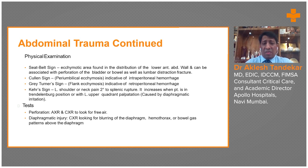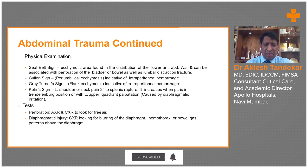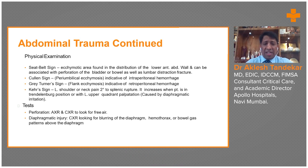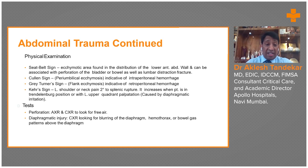Lower abdominal ecchymosis can lead to perforation of the bladder and can also cause lumbar distraction fractures. Periumbilical ecchymosis may be indicative of intraperitoneal hemorrhage. Flank ecchymosis may suggest retroperitoneal bleeding. Pain in the left shoulder or pain radiating to the neck should raise suspicion for splenic injury. These patients should be evaluated with chest X-ray, abdominal X-ray, and CT scan, which is very, very important.